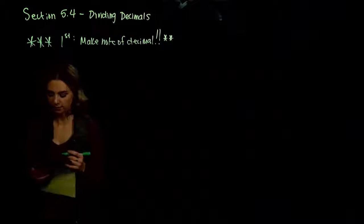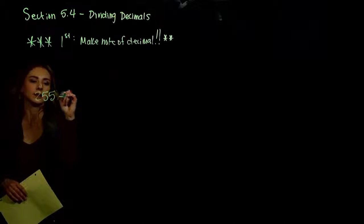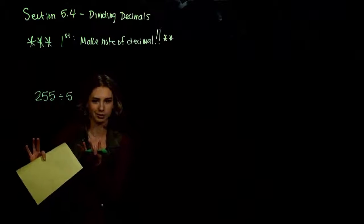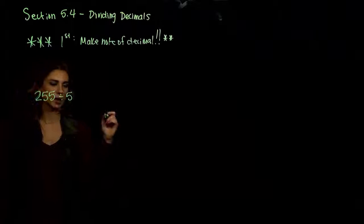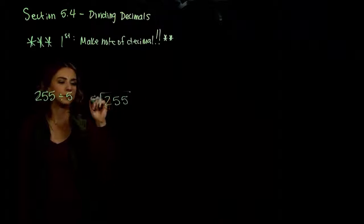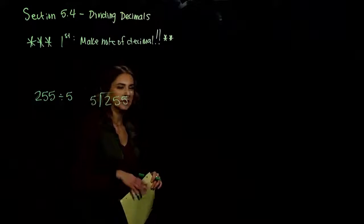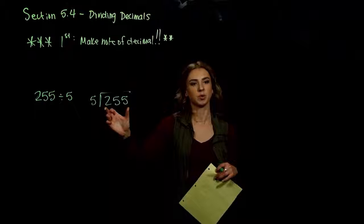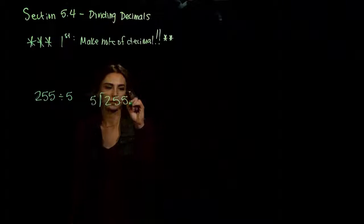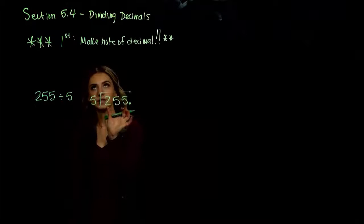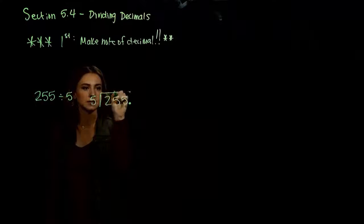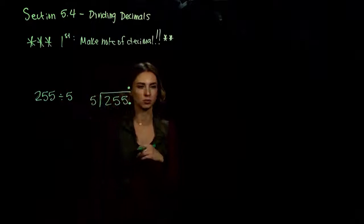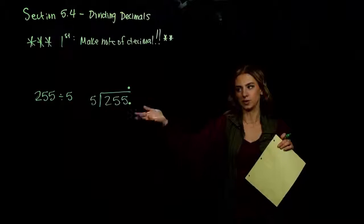Let's take 255 and divide it by 5. We'll do the long-hand division and make note of where these decimals are, even though we're dealing with whole numbers. The larger one that we're trying to divide up goes on the inside, and the smaller one we're trying to break it up by goes on the outside. Always, very first, make note of where the decimal is inside our large number.